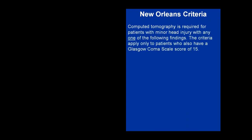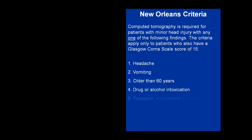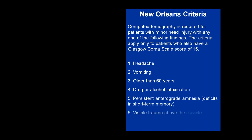The New Orleans criteria states that CT is required for any patient with minor head injury with any one of the following findings — and these criteria only apply to patients with a GCS of 15. Does the patient have a headache? Has there been vomiting? Are they older than 60 years of age? Is there any drug or alcohol intoxication? Do they have persistent anterograde amnesia — meaning they cannot form new memories? Is there visible trauma above the clavicle? And have they had a seizure?